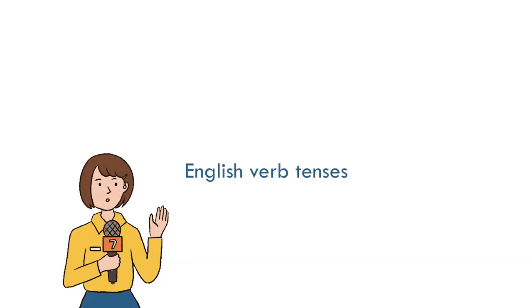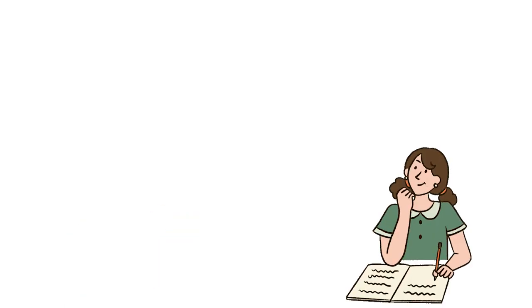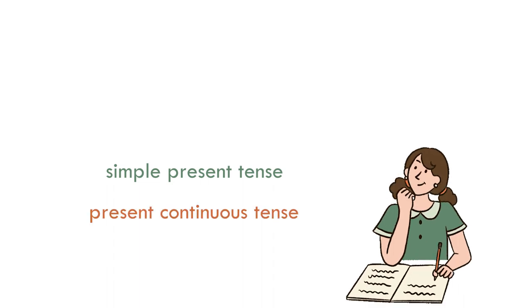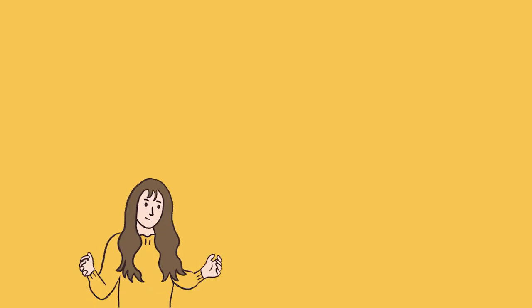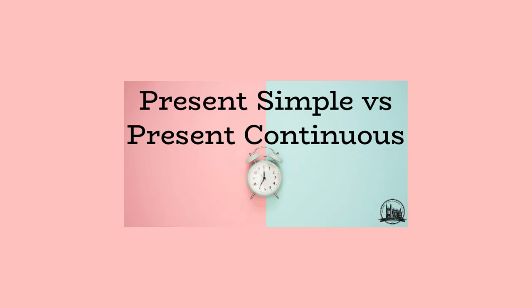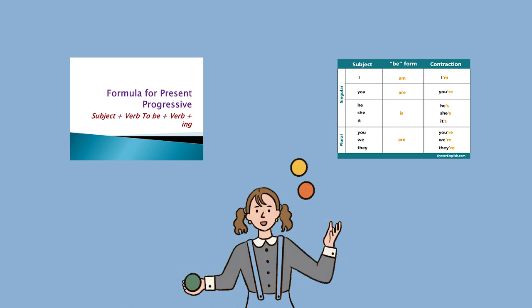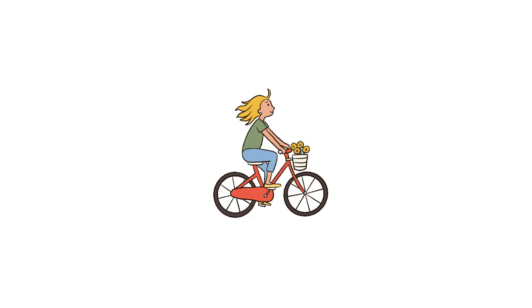Our first GG is suitable for grammar tenses that are similar and may cause a bit of confusion. In one of my classes, I was supposed to teach the simple present tense and the present progressive tense. As you know, dear teachers, both tenses make use of the verb 'to be' and some students might confuse the forms of these tenses. So this activity is all about differentiating the forms.